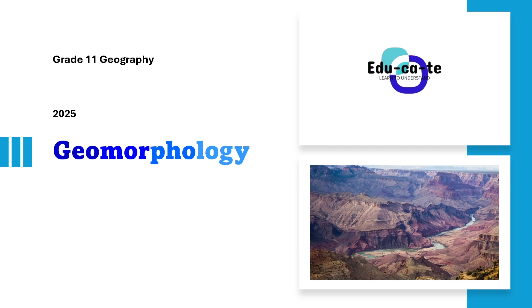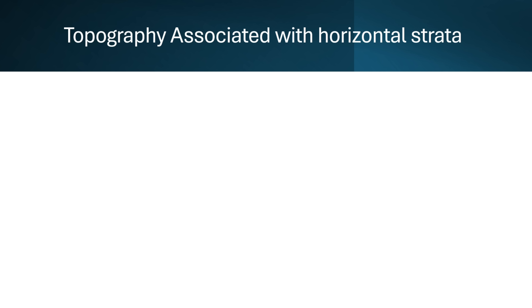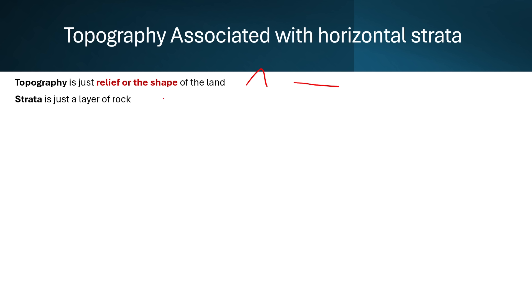Welcome to Educate. Let's talk about geomorphology, particularly the topography associated with horizontal strata. Topography is simply the relief or shape of the land. Strata refers to layers of rocks. So when we talk about topography associated with horizontal strata, we want to see the landforms or shape of the land when we have horizontally layered rocks.